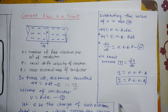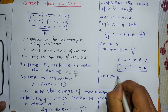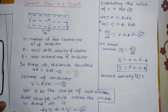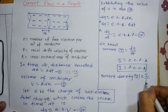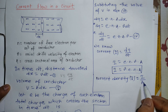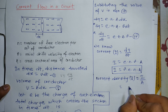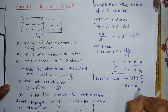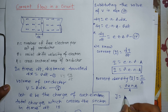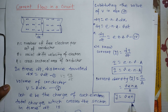Now, another topic: current density. Current density J is simply represented as current per unit area — current flowing through per unit area is known as current density. Since I = e·n·v·A, dividing by A: J = I/A = e·n·v. This is the relation for current density.